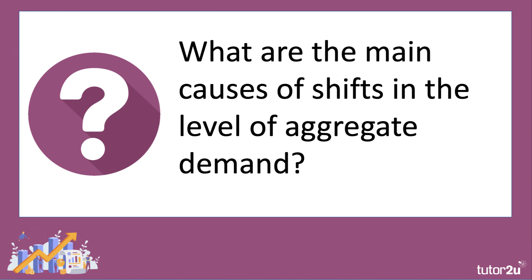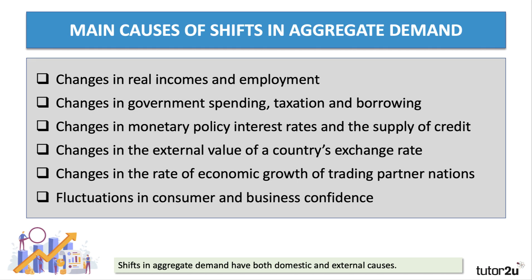There are many potential factors. We're going to isolate and talk about six of them that will get you through good exam questions. A key point is that shifts in AD have both domestic or internal and external causes. Some of these factors include changes in real incomes and employment — how much money people have to spend, and how many people actually have a job that pays a regular income.